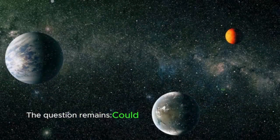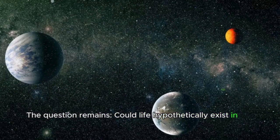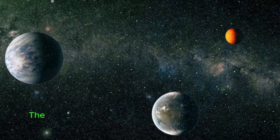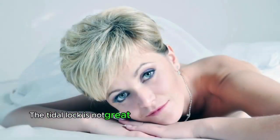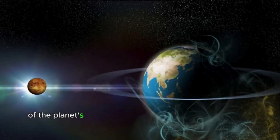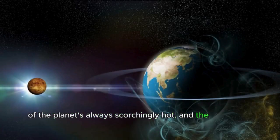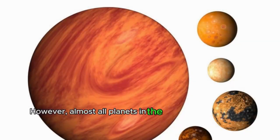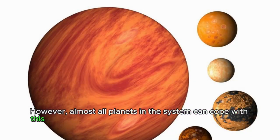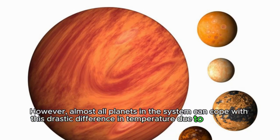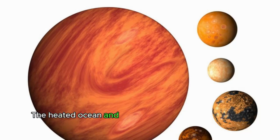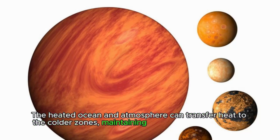The question remains, could life hypothetically exist in this TRAPPIST-1 system? The tidal lock is not great for sustaining life, because one side of the planet's always scorchingly hot and the other side is freezing cold. However, almost all planets in the system can cope with this drastic difference in temperature due to their water content and their atmosphere. The heated ocean and atmosphere can transfer heat to the colder zones, maintaining the temperature balance.